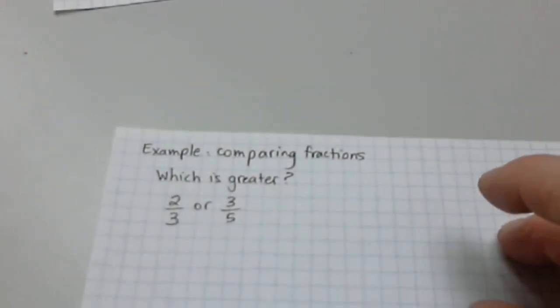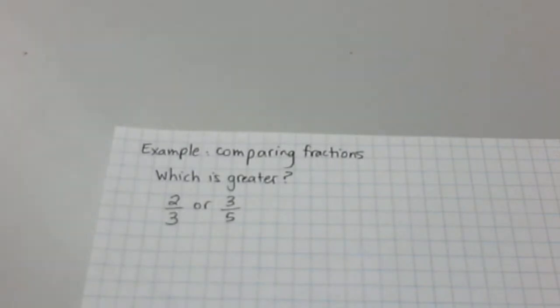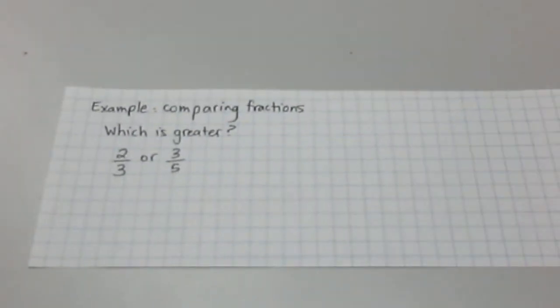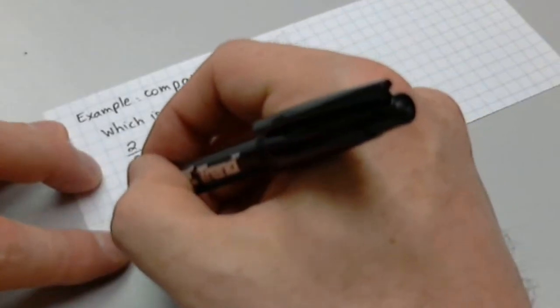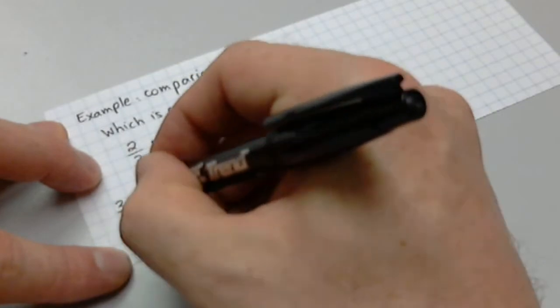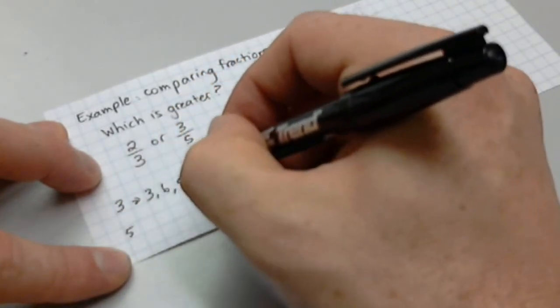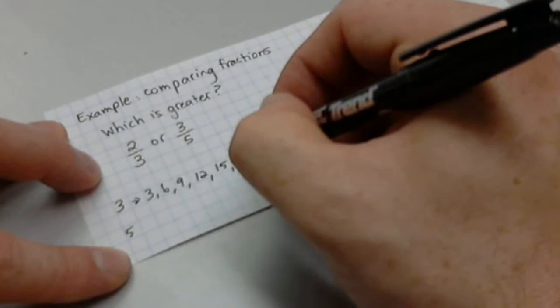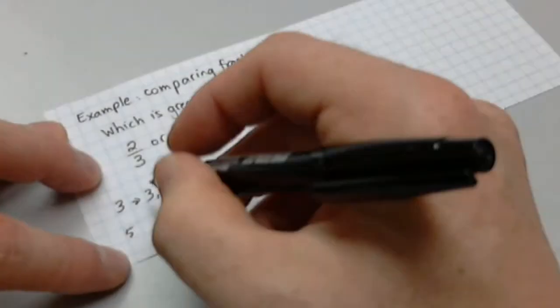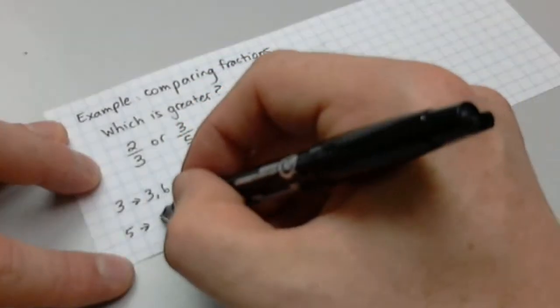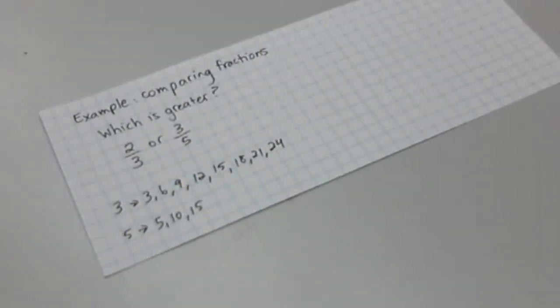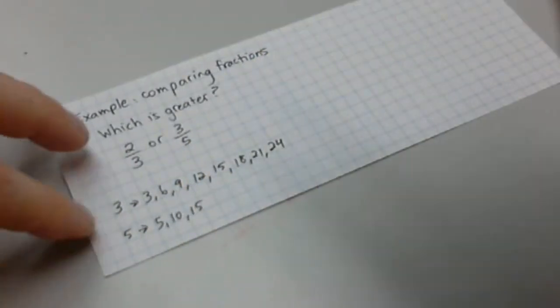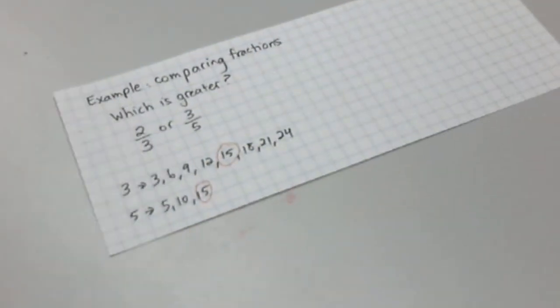Next thing that we're going to be doing is we're going to be comparing fractions. So, the question that we're working with is which is greater, 2/3 or 3/5? Now, again, you need to understand common denominators. If we use the denominators, we can do the same method. We have 3, 6, 9, 12, 15, 18, 21, I'm going to stop at 24. 5, 10, and then 15. And then, hopefully, what you see is that 15 is the first number that occurs on both lists.